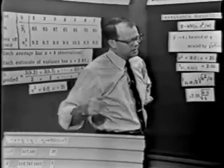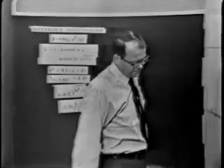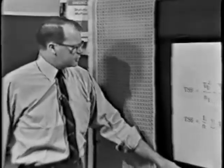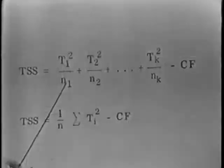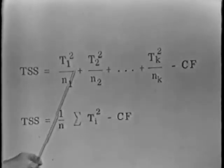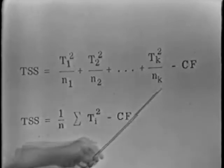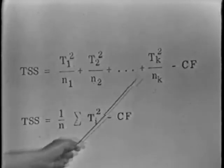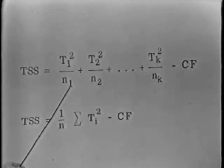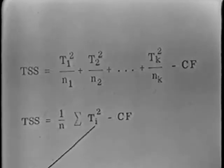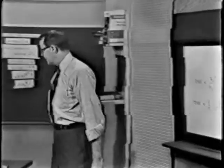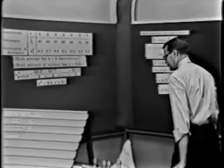Do you recall the formula for getting the sum of squares associated with treatment effects? It's a real easy formula. I have it over here on the board. And it says what we're supposed to do is take the treatment totals, square them, divide by the number of observations in each total, and then sum up all these quantities for each of the k classifications, and then finally subtract the correction factor. In our example, n1, n2, and nk, all these n's are equal. There are four observations in each one of the classifications, and so the formula collapses down to 1 over n times the sum of the squares of the treatment totals minus the correction factor.